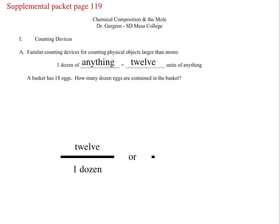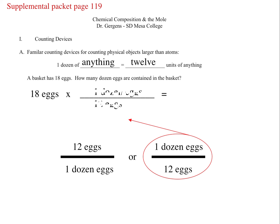Well, we know there's 12 per one dozen or one dozen per 12. We know there's 12 eggs per one dozen eggs or one dozen eggs per 12 eggs.